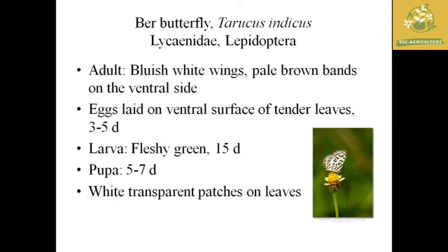The next pest is ber butterfly, with the scientific name Tarucus theophrastus, belonging to family Lycaenidae and order Lepidoptera. Eggs are laid on the ventral surface of leaves, providing protection from sunlight. The larvae are fleshy green with a larval period of around 15 days. Pupation takes place in leaves or soil with a pupal period of five to seven days, leaving white patches on the leaves.